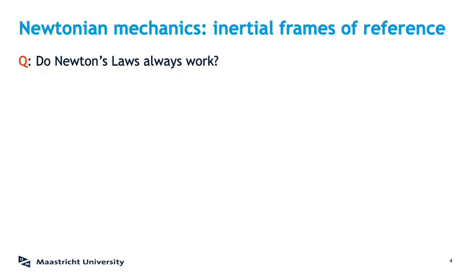We'll start with a question: do Newton's laws always hold? We know that they stop holding when things go really fast, because then relativity takes over, or when masses are very small, because then quantum mechanics takes over. But that's not what I mean. The question is: for everyday objects at everyday velocities, do Newton's laws always hold to correctly predict their motion? And the answer is no.